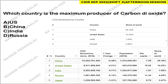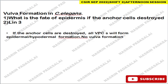Next: which country is the maximum producer of carbon dioxide? Based on 2016 data, China is the largest producer with approximately 29.18% of global CO₂ emissions. So China is the correct answer.